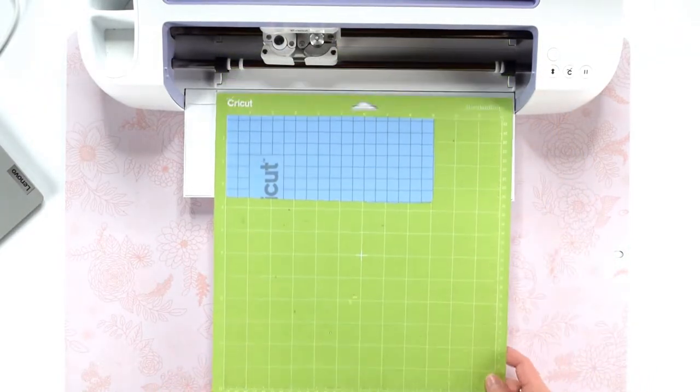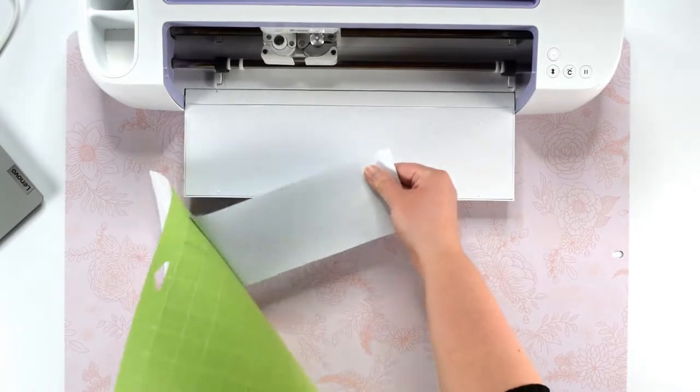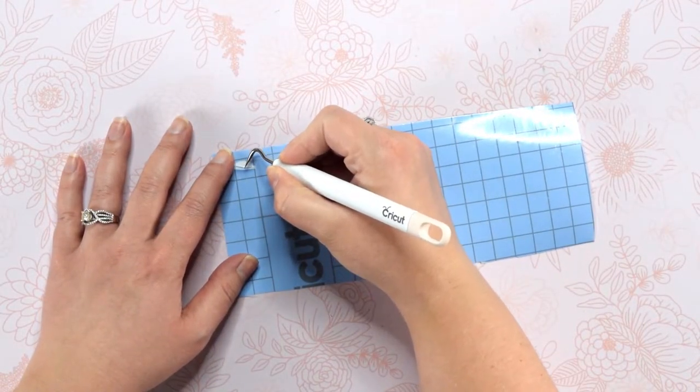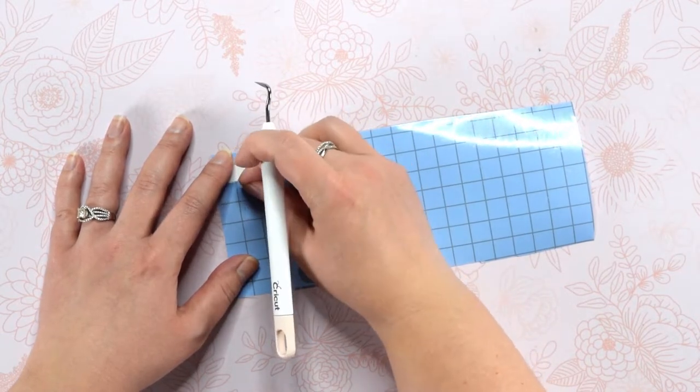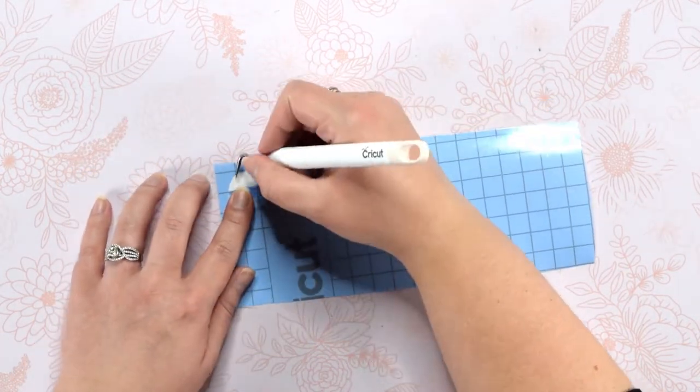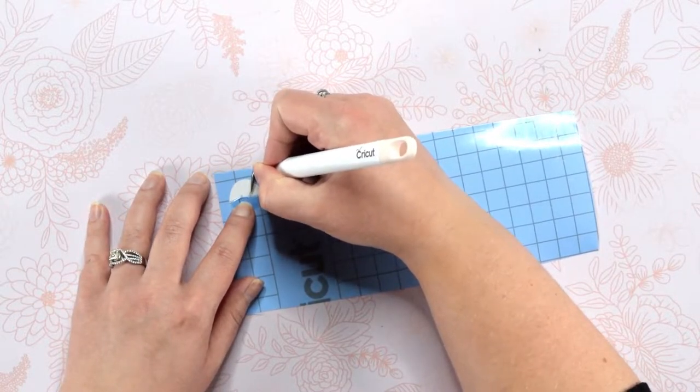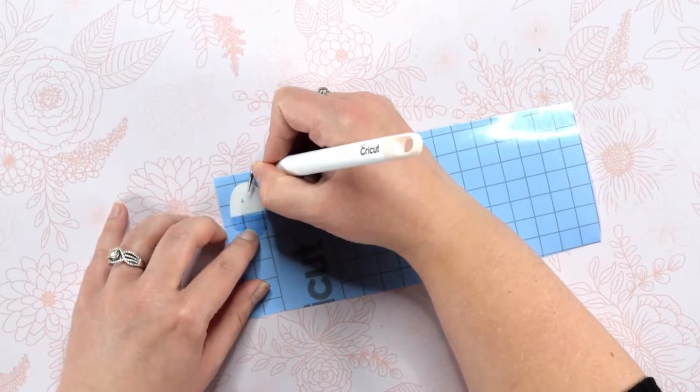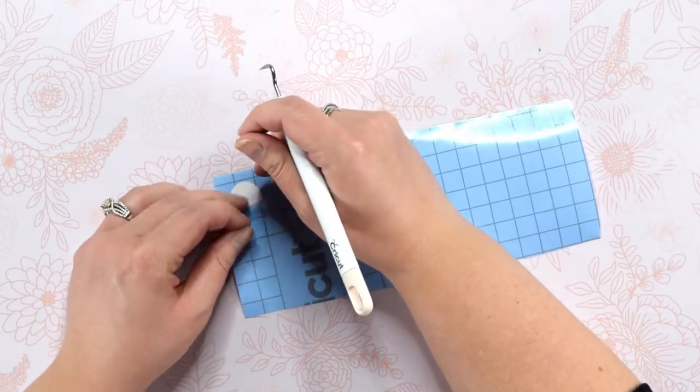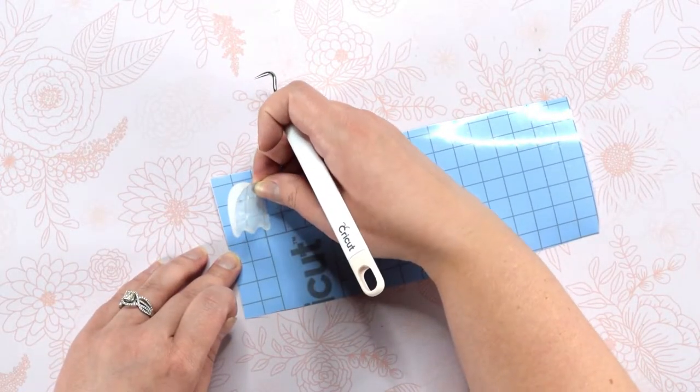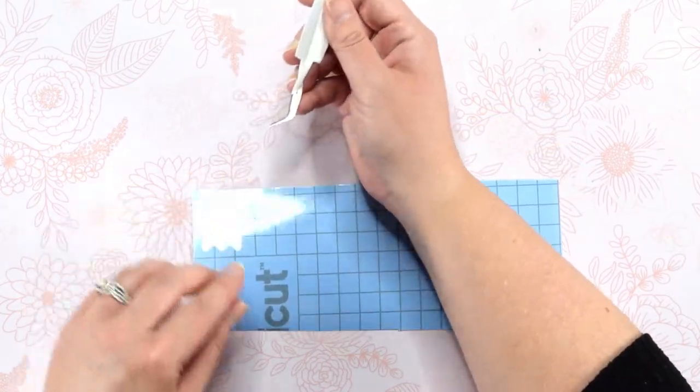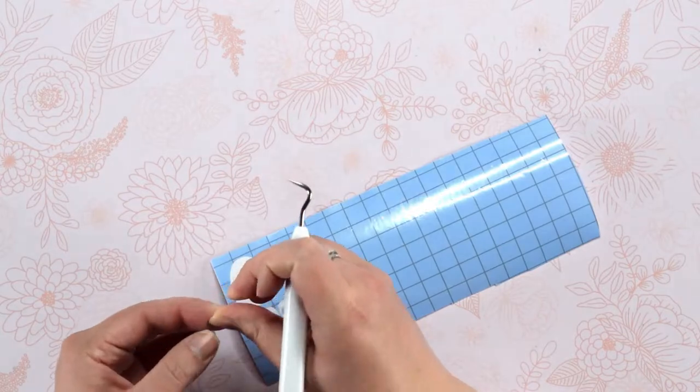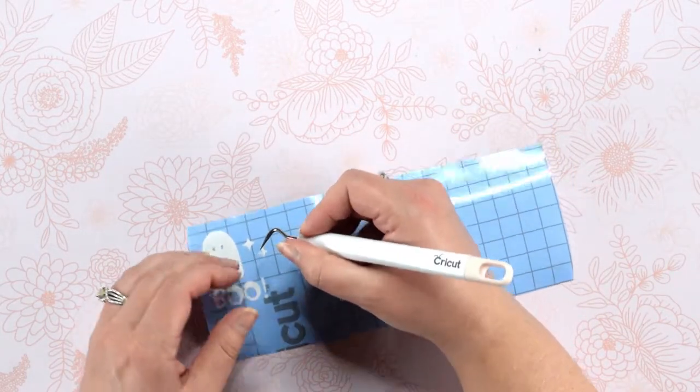When the machine is done cutting, you can unload the mat and remove the vinyl. Next, we are going to weed the vinyl. Because we are going to etch the design onto the glass, we need to weed only the parts of the design where we want the etching to show up. We will use a weeding tool to get all of the smaller pieces removed from the design. Be careful when you are weeding the ghosts and the boo letters, because the eyes and the inside parts of the letters can very easily be pulled up. If some of the design does come up, just carefully place it back down on the stencil's paper backing.